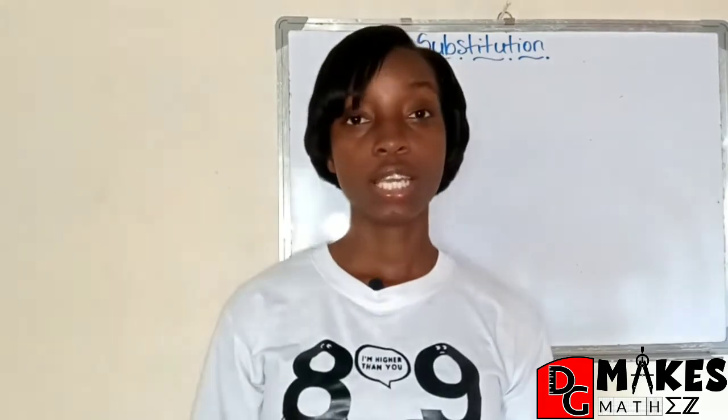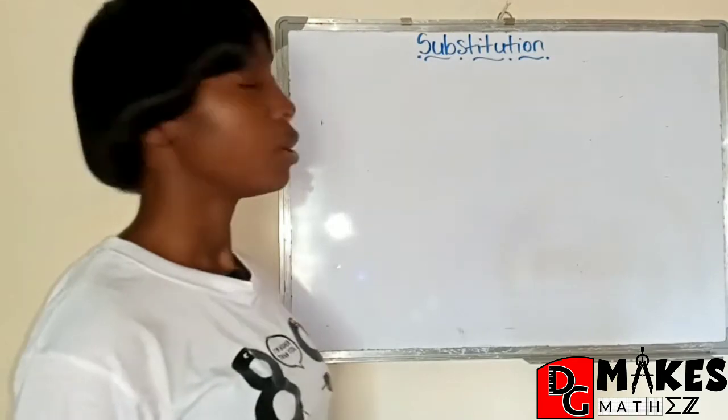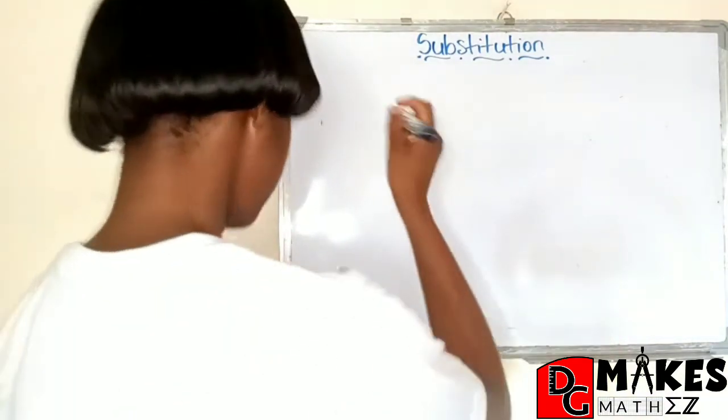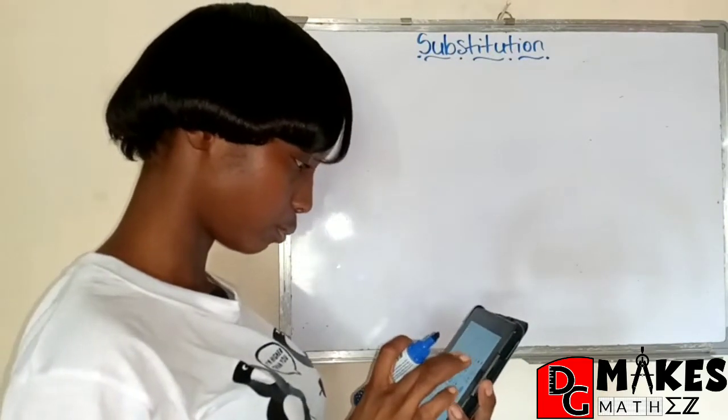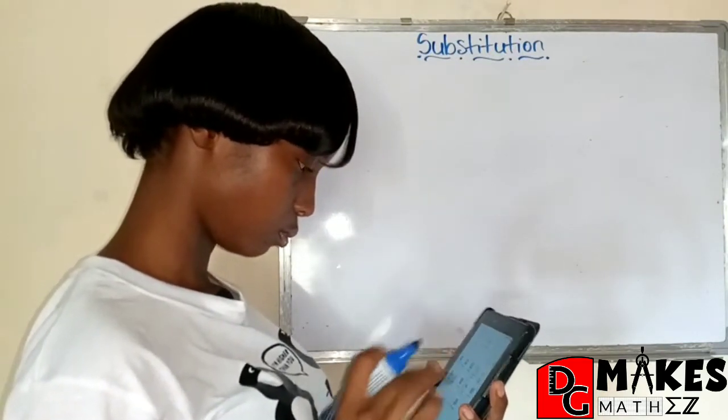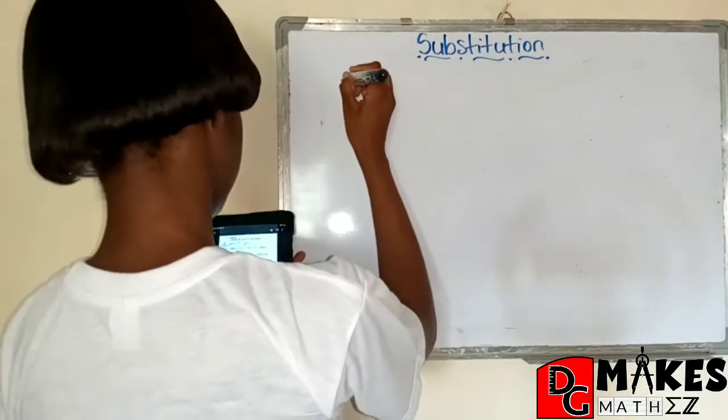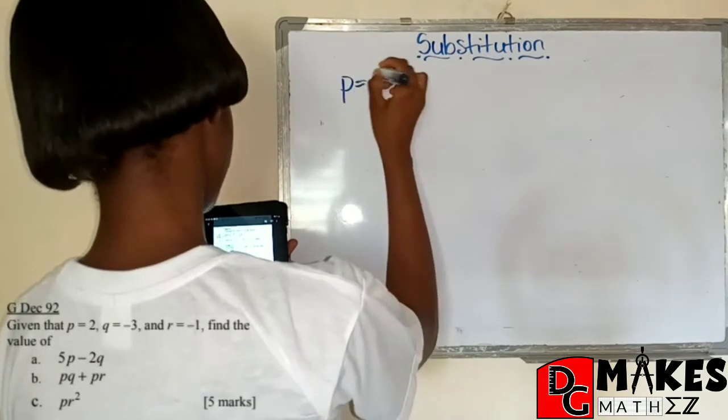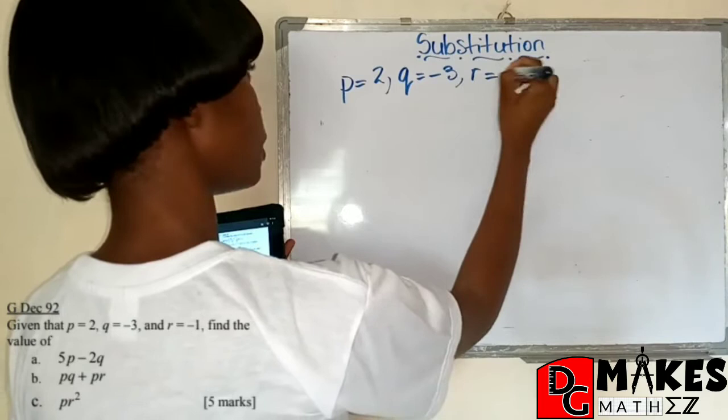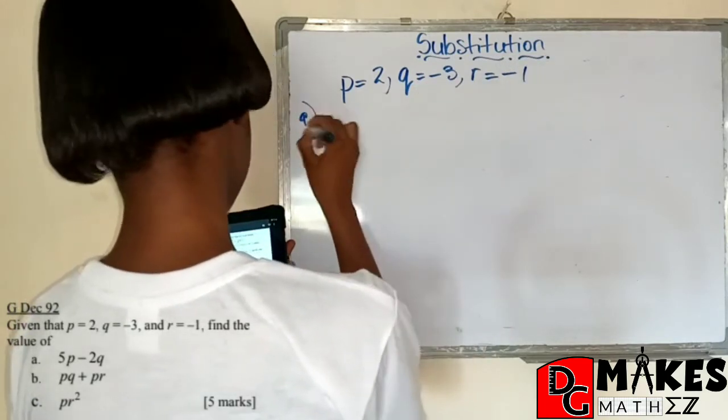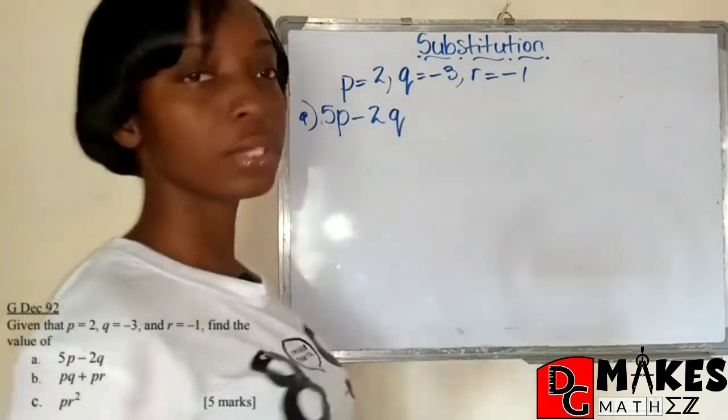All right, and we will go straight into our questions. You will see the question on your screen. So here we go. Our first question says, given that P equals 2, Q equals negative 3, and R equals negative 1, we should find 5P minus 2Q. So we'll do that part first.